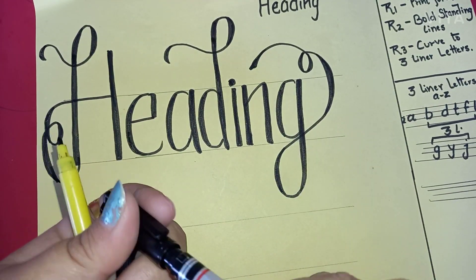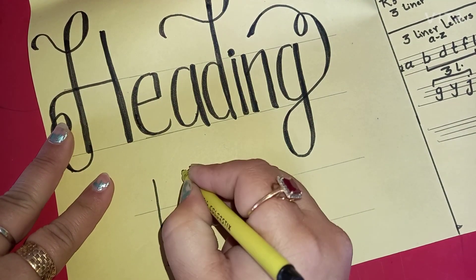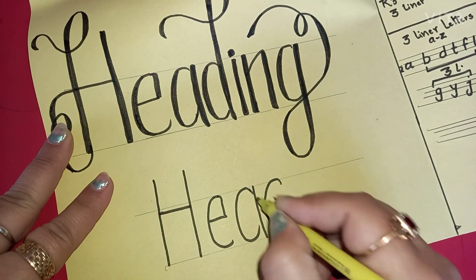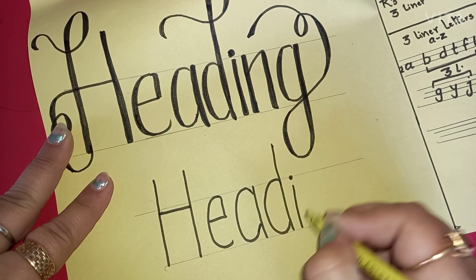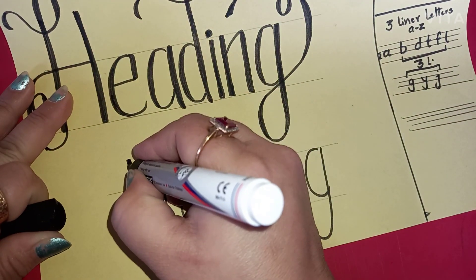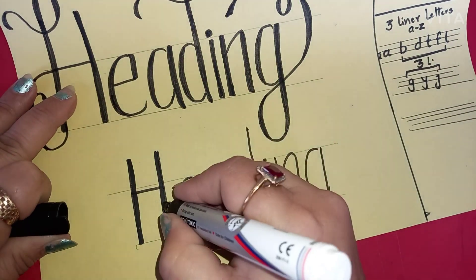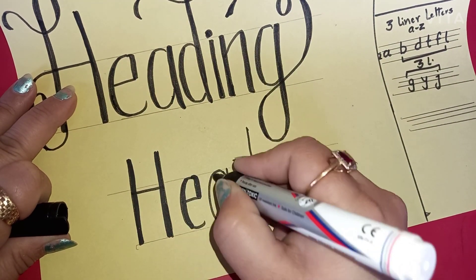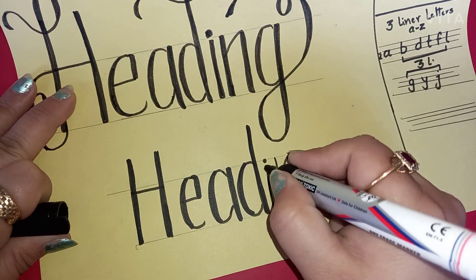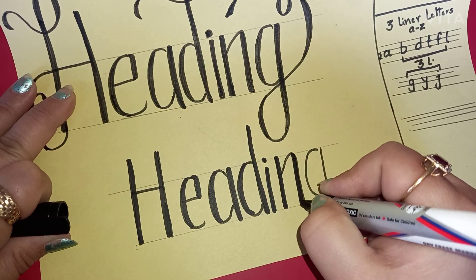For that, we will be taking two different nibs if we'll be using sketch for writing to give it a bold look. Let's take a bold marker, and if you want to use the CD marker for heading writing, then use a sketch for the bold work. Now your work will become even more easy with this technique.